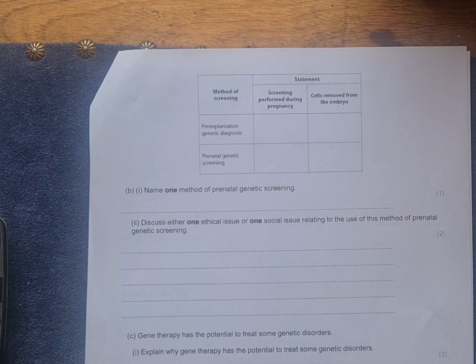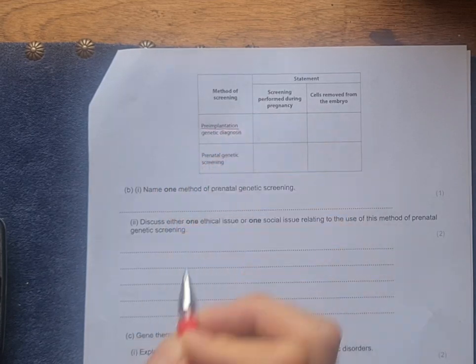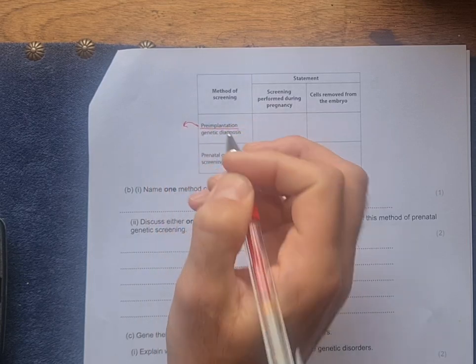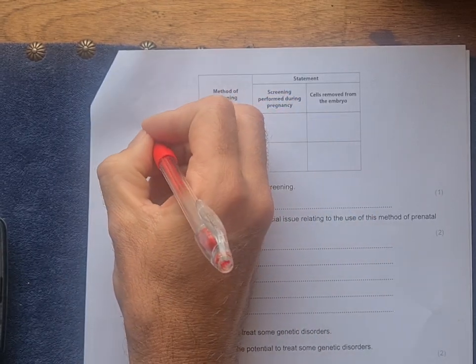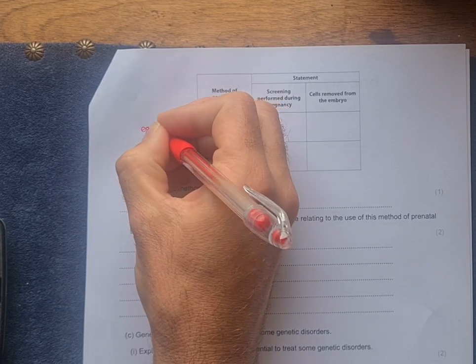Okay, so some forms of genetic screening. We have pre-implantation, meaning before the egg settles on the uterus and starts to develop.